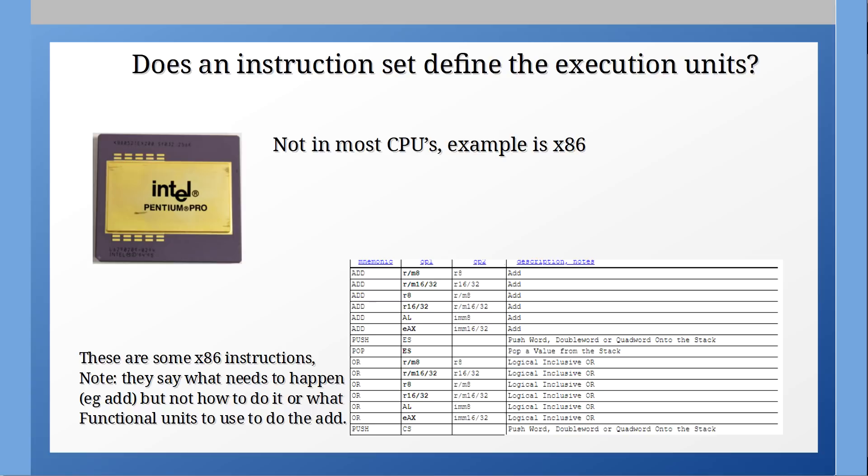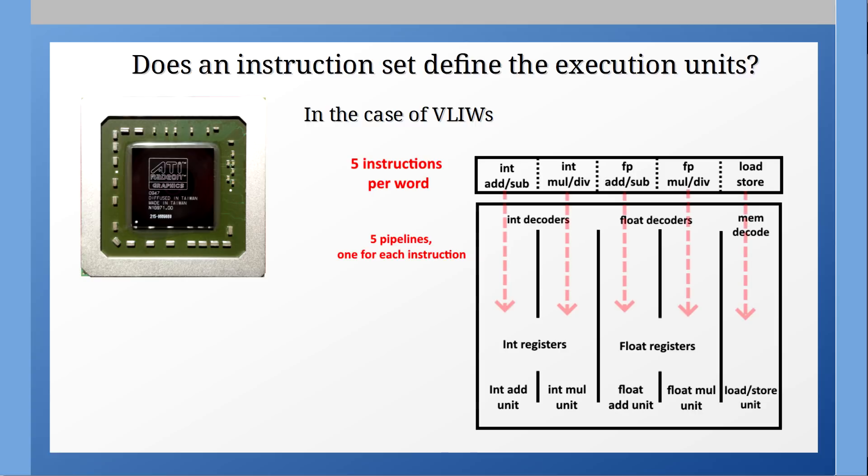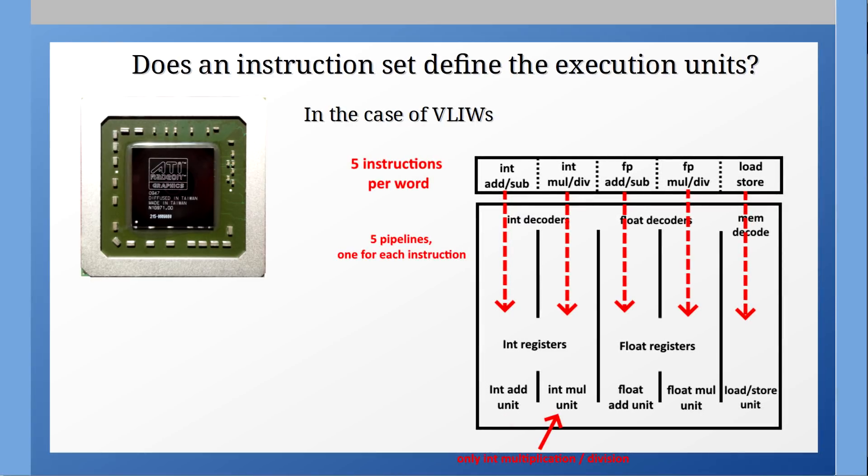However if we look at a VLIW instruction set then the position of the instructions in the instruction word represents what execution pipeline that instruction is going to get executed on. Therefore in this case the instruction set directly defines what hardware that pipeline must have in order to support these instructions.